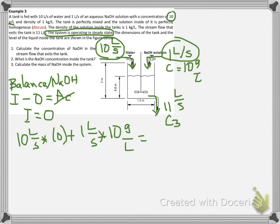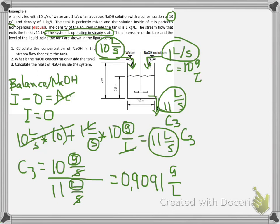Times the concentration which is 10 grams per liter. That is going to be equal to the output, which is 11 liters per second times C3. From there we can solve for C3. The concentration of sodium hydroxide at the outlet stream is 0.9091 grams per liter.